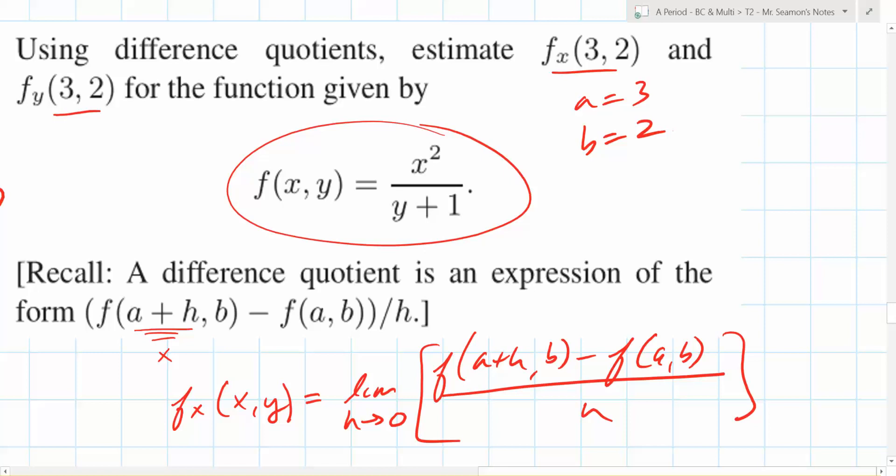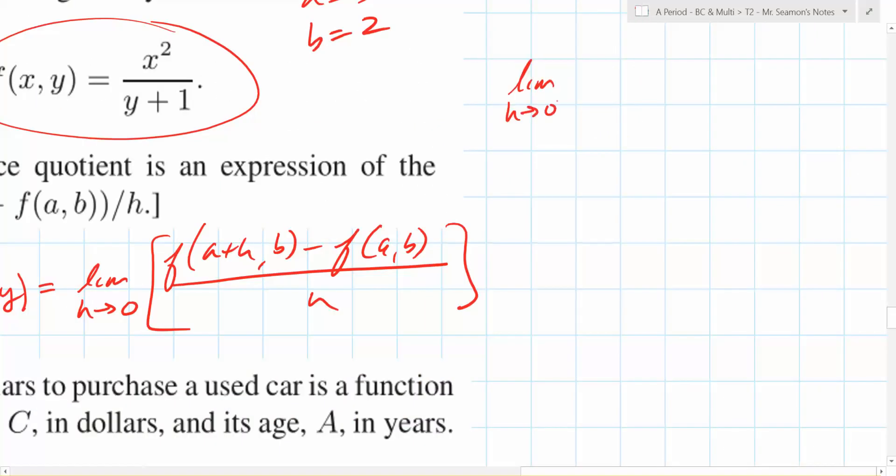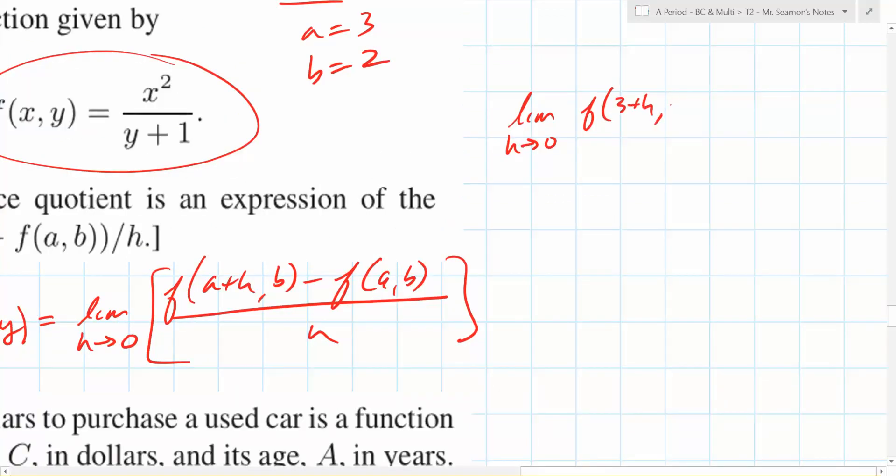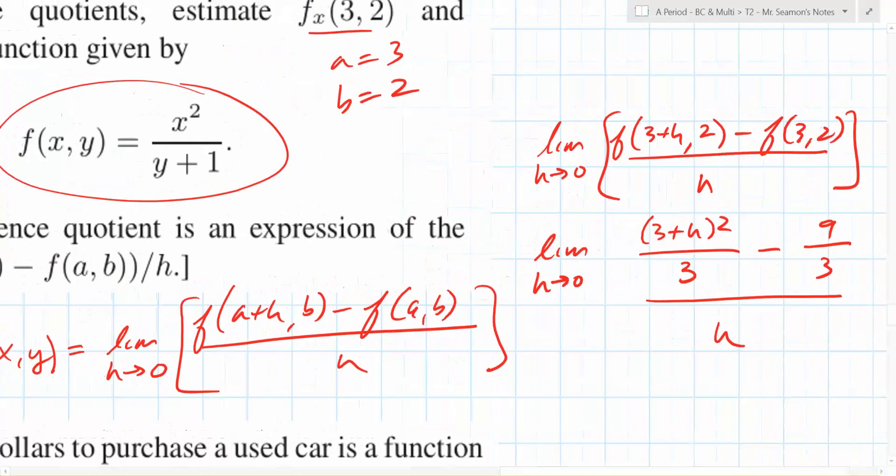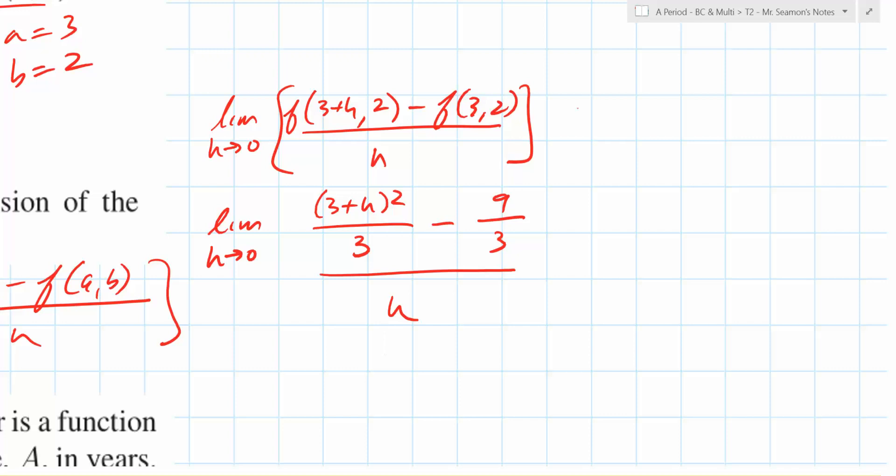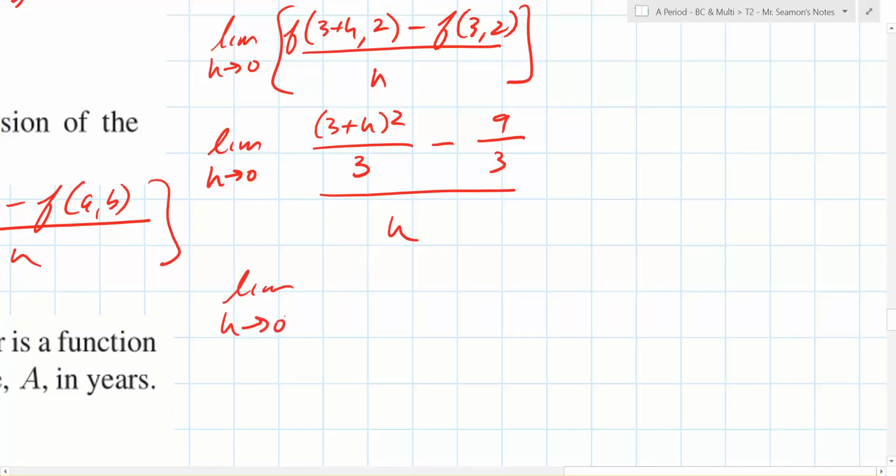Take a is equal to 3 and b is equal to 2. Do this limit for me and tell me what you get. Let's do this carefully. It's going to be the limit as h goes to 0 of the function a plus h. So it's going to be f of 3 plus h, comma 2 minus f of 3, 2 all over h. So now you just do fill in the blank stuff and be careful about filling it in. So that's going to be 3 plus h squared over 3 minus, what's f of 3, 2? What, 9 over 3 all over h. Hey, do we have a common denominator up top? Woohoo, we do. Sweet.